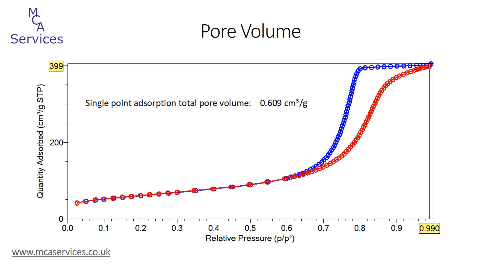This is just one measurement of pore volume. It's also possible through various other models to determine pore volume in certain pore size ranges — for example, micropore volume can be calculated through the DFT method we saw previously, or through other methods such as T-plots, Dubinin plots, or Horvath-Kawazawi. Alternatively, mesopore and macropore volumes can be obtained through application of the BJH model, and we'll come on to consider that next.